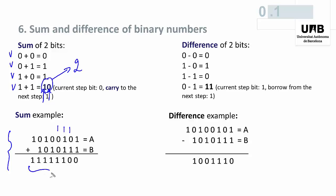When computing the difference between two bits, there are four possibilities: 0 minus 0 equals 0; 1 minus 0 equals 1; 1 minus 1 equals 0; and 0 minus 1 equals negative 1, which can be written as minus 2 plus 1 — so the current bit of this step is 1, but there is a borrow from the next step equal to 1.